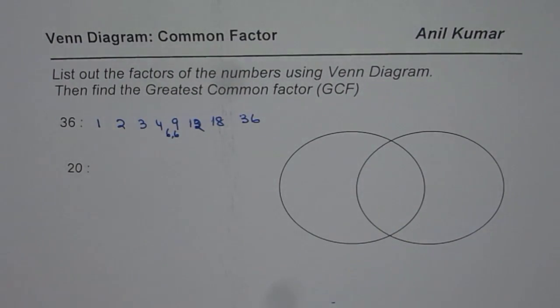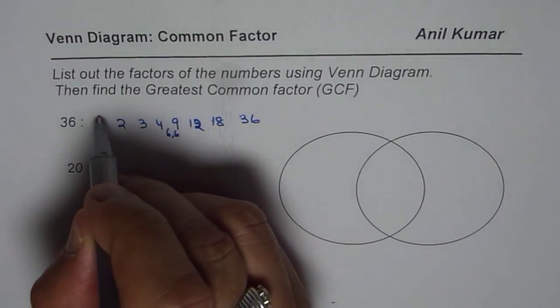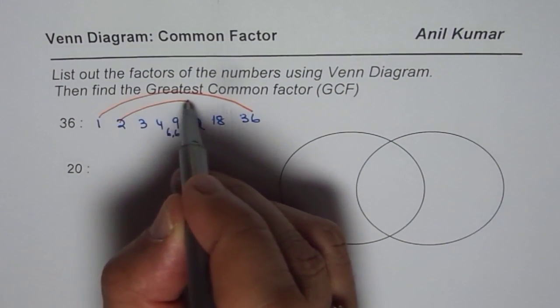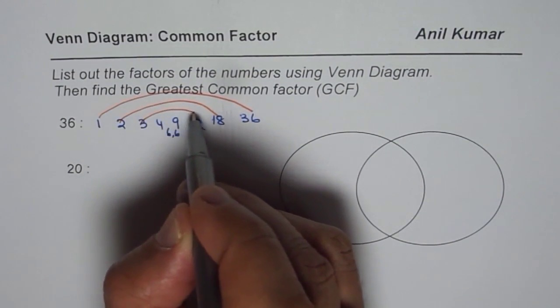Now let me join these numbers with my rainbow. So 1 times 36 is 36, 2 times 18, 3 times 12.